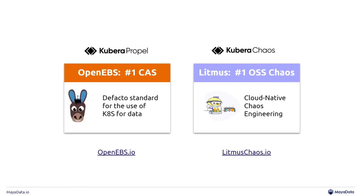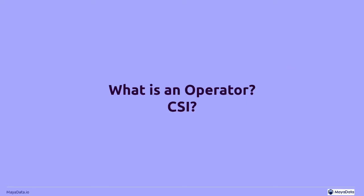We also have licenses you can buy for these. You may hear the terms Kubera Propel and Kubera Chaos. These are effectively just the licenses if you want to get professional services and other fancy stuff to go along with those open source solutions, which are CNCF projects.